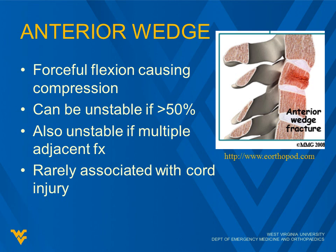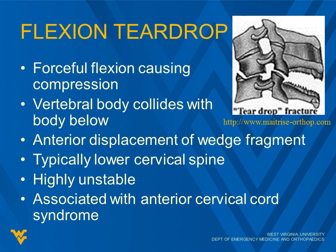Anterior wedge fractures result from forceful flexion causing compression. They can be unstable if there's greater than 50% decrease in height or multiple adjacent fractures, but they are rarely associated with a cord injury — the major injury occurs far away from the spinal cord on the very anterior part of the body. Flexion teardrop fractures are also from forceful flexion causing compression, where the vertebral body collides with the body below, causing anterior displacement of a wedge fragment. They're typically lower in the cervical spine and highly unstable, especially with anterior cervical cord syndrome.